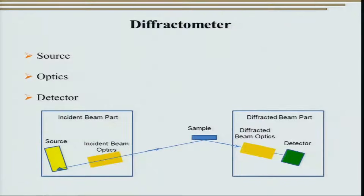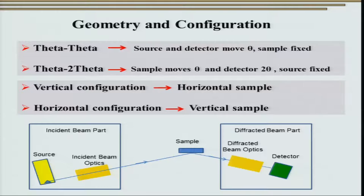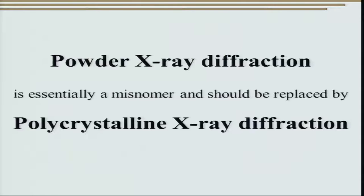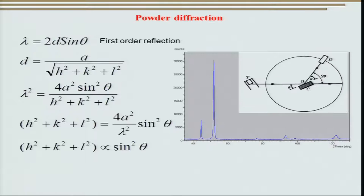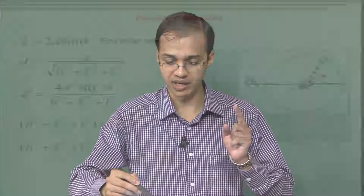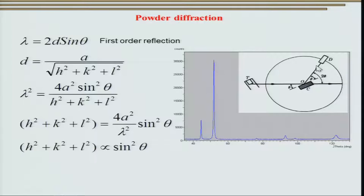A diffractometer can be configured in what is known as θ geometry. Looking at the diffraction diagram, the detector moves at 2θ while the sample is positioned accordingly. One approach is to move the sample at θ and the detector also by θ, keeping the detector at 2θ relative to the incident beam — this is θ geometry, achieved by keeping the sample fixed and moving both the tube and detector at θ. The alternative is to fix the tube and move the sample at θ and the detector at 2θ, known as θ-2θ geometry.